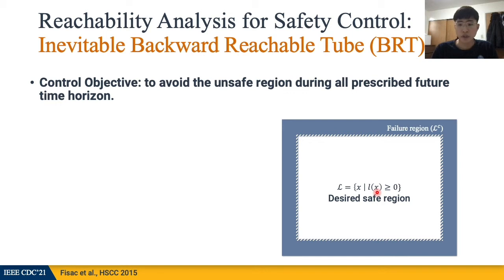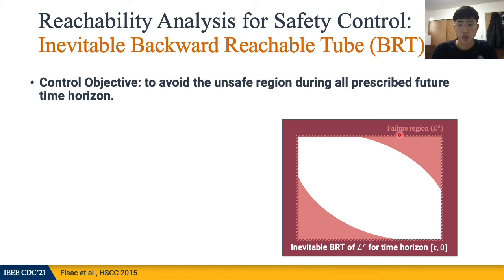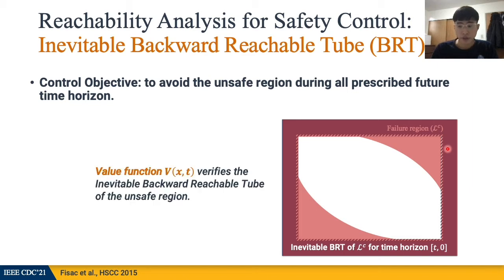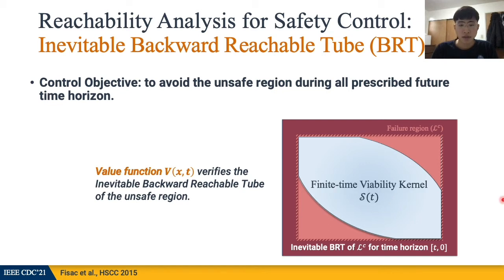In order to solve for the optimal safety control, we first set the failure region as the target set, and solve for its inevitable backward reachable tube, which includes the states that are inevitable to reach the unsafe set regardless of the control effort. Once you have computed the value function, you have essentially solved for this inevitable backward reachable tube, and the complement of that set will be the set of states from which you can render the trajectory safe. This set is typically called the viability kernel.